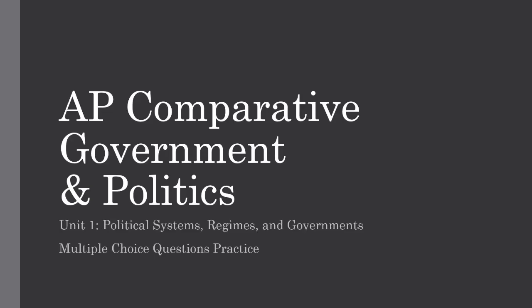Hey everyone, welcome back to another video. In today's video we're going to go through Unit 1 multiple choice questions for AP Comparative Government and Politics. These are all the questions I took from my Unit 1 practice test — link is in the description. You can do the questions yourself and watch the video or do them as we go through. There are 68 multiple choice questions. I'll go over the questions, answer choices, and explain why certain ones are right or wrong. There are also free response questions — link in the description. I'm doing these for all the units, so let's get started.